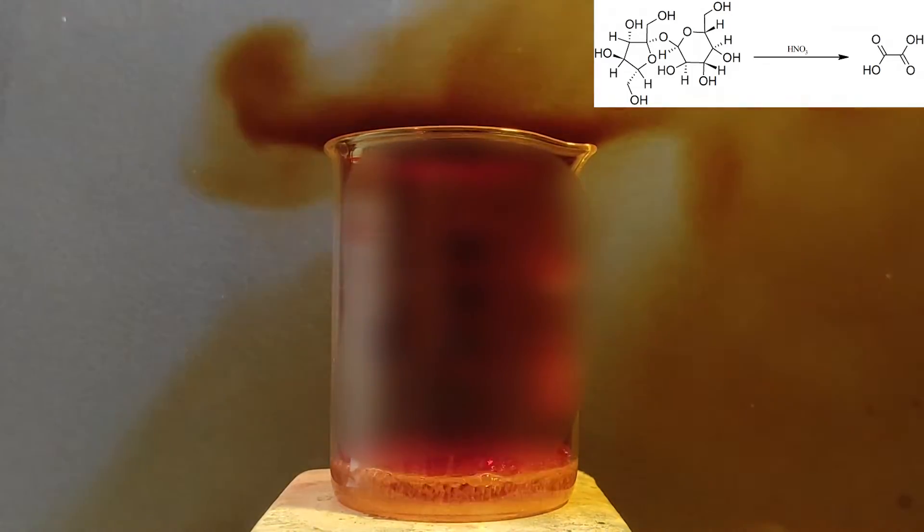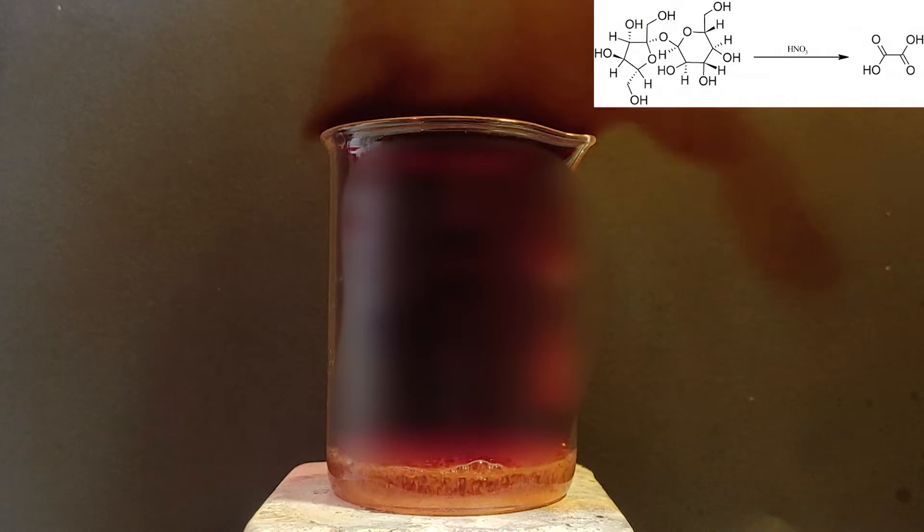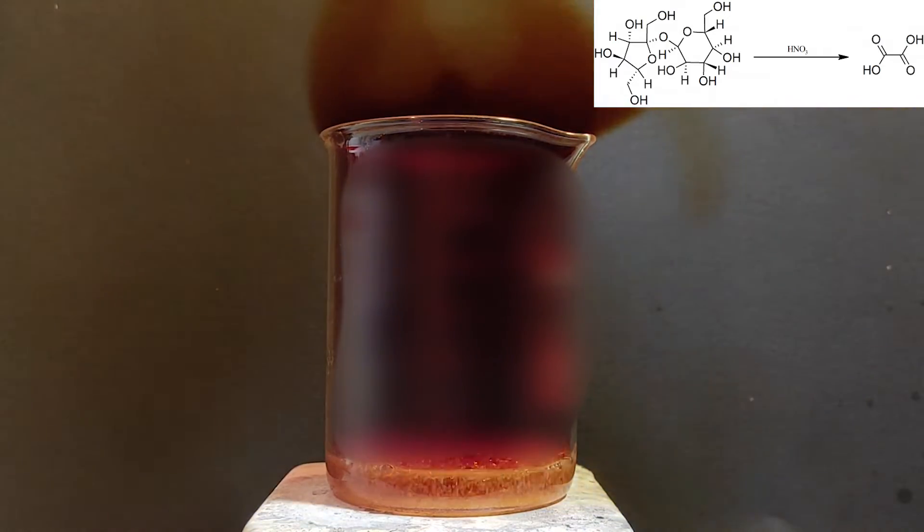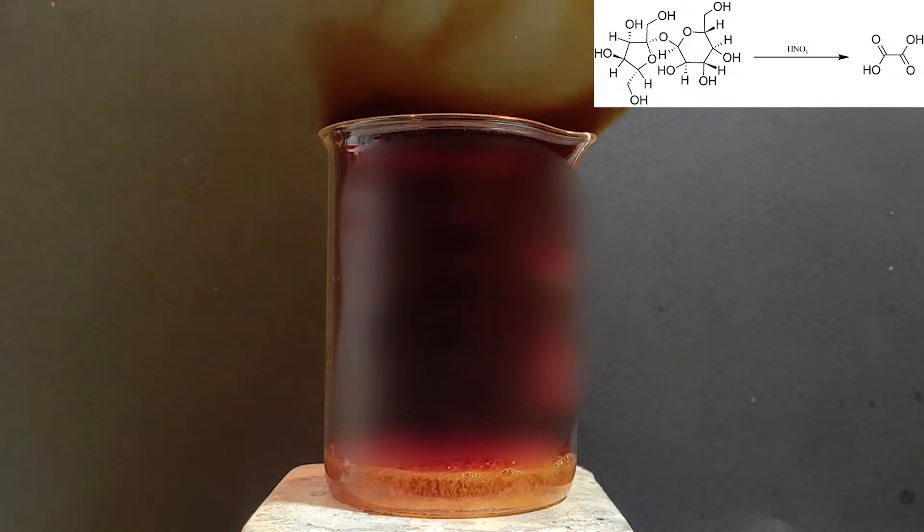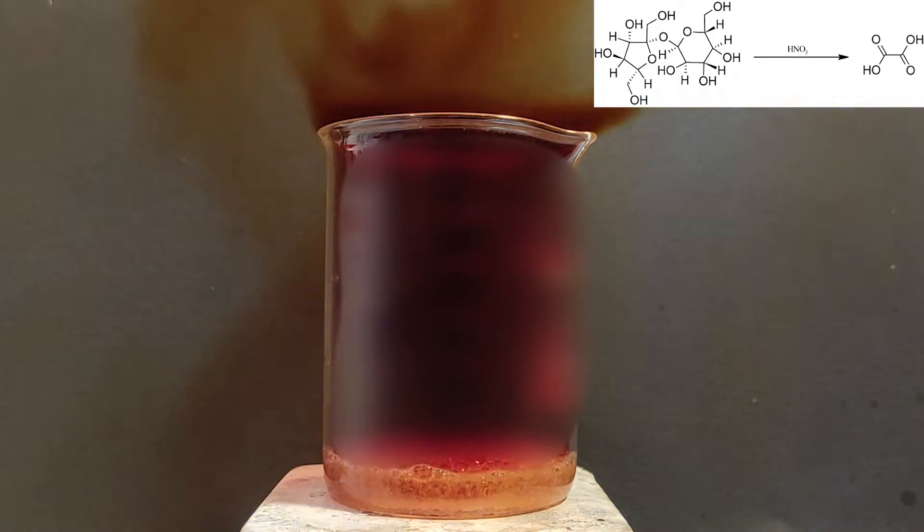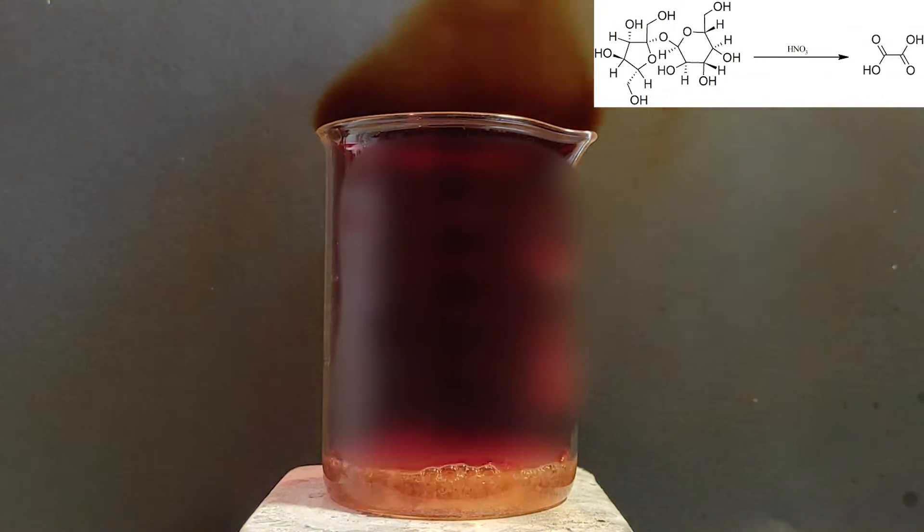What's being let out here are nitrogen oxides. The red blood color that you see here is most likely nitrogen dioxide and some dinitrogen trioxide. The sugar here is in excess and it will deplete most of the nitric acid by the end of the reaction.